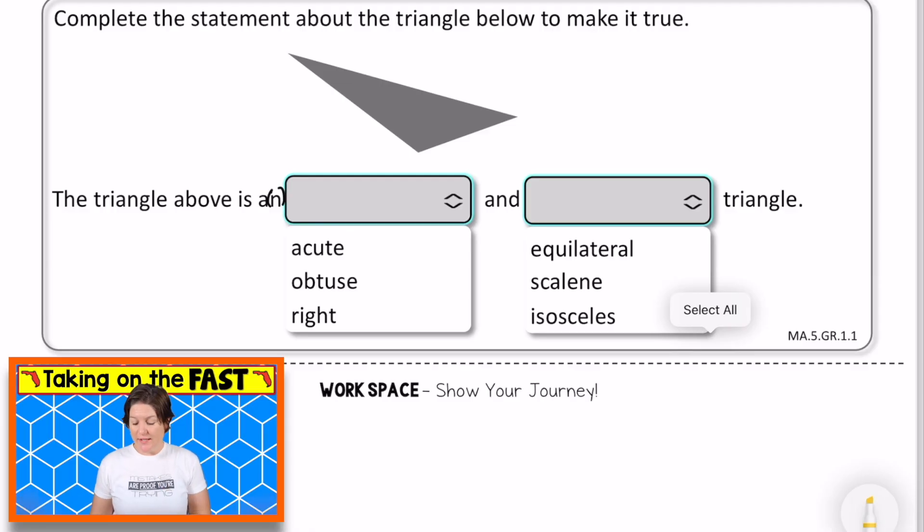This next problem is an editing task problem. It says to complete the statement about the triangle below to make it true. It says the triangle above is an acute, obtuse, or right triangle. Well, right here I spot one obtuse angle. So it must be an obtuse triangle.